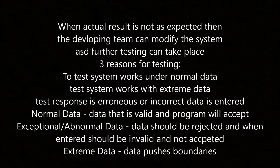When an actual result is not as expected, the development team can modify the system and further testing can take place. The three reasons for testing are: to test the system works under normal data, to test the system works on extreme data, and to test the response when erroneous or incorrect data is entered. Normal data is data that is valid and the program will accept. Abnormal data is data that should be rejected as invalid, and extreme data is data that pushes the boundaries.